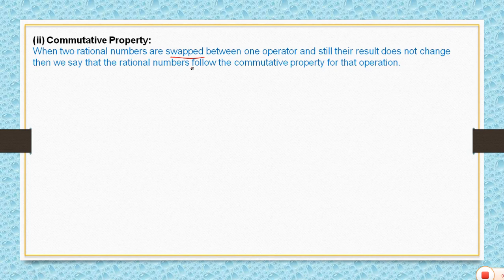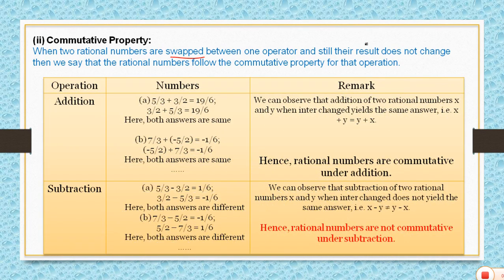For addition, x is 5 by 3 and y is 3 by 2. Adding both we get 19 by 6. Now I swap the positions — I put y's value first, which is 3 by 2, and add x's value 5 by 3.